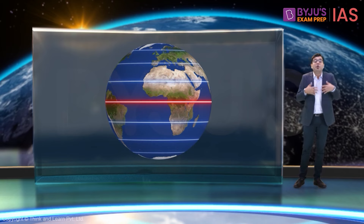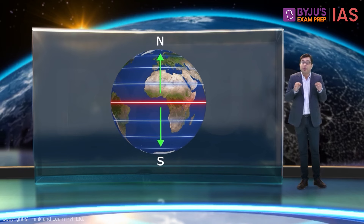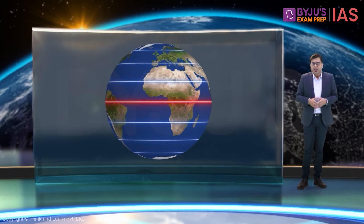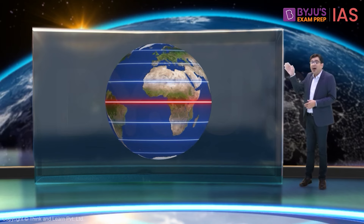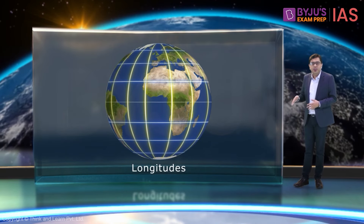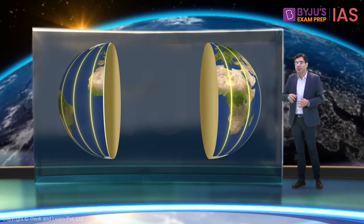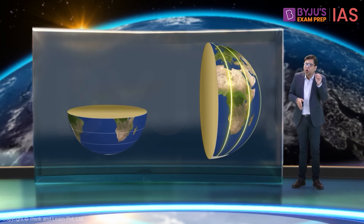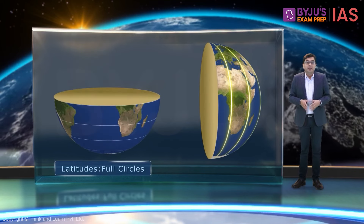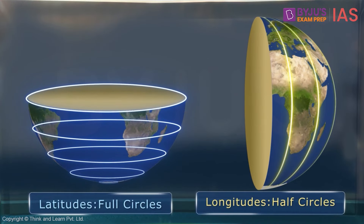Latitudes are used to check how far towards the north or south a place is from the equator. Now let's turn our attention to the other set of lines. These are called longitudes. Just like the latitudes, these are circular as well as imaginary. But there is a small catch here — the latitudes are full circles, but longitudes are half circles. But why?